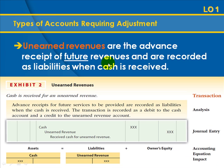Unearned revenues are the advance receipt of future revenues and are recorded as liabilities when cash is received. A real-world example: if you are a property manager renting out apartments or homes, a tenant could prepay their rent — that would be unearned rent or unearned revenue. Another example is a lawyer's retainer fee, which cannot be spent until the lawyer actually does work for you. When we receive unearned revenue, we debit cash and credit the unearned revenue account, which is a liability account.